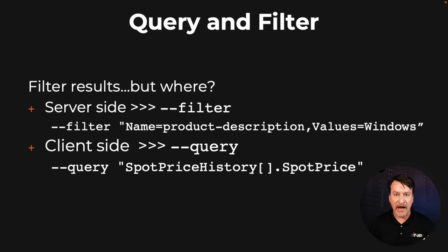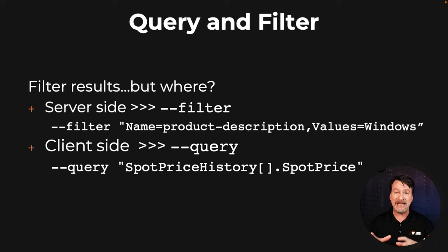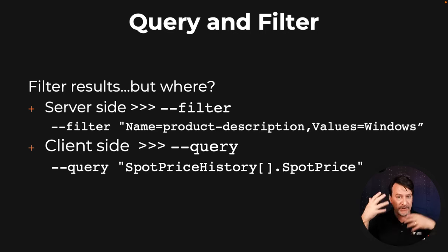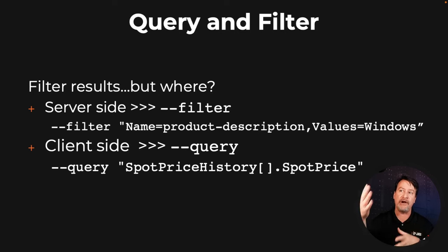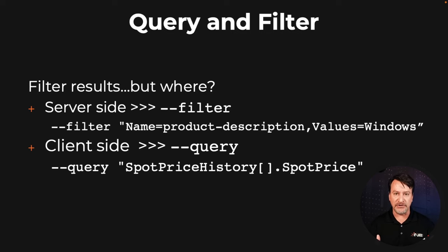Querying happens on the client. If you want to keep something in your mind, remember: querying on the client, querying on the client, when it comes to the AWS CLI. That lets you narrow down what's actually output to the screen. Here's what we're going to do: we're going to use the filter to set the product description to Windows — instead of looking at Red Hat, Ubuntu, whatever might be available in the spot price history, we're only going to look at systems that are running Windows.